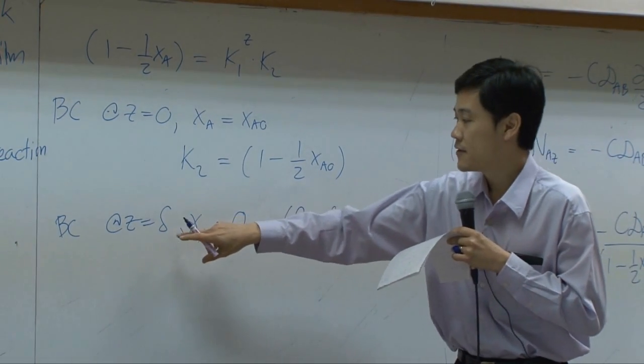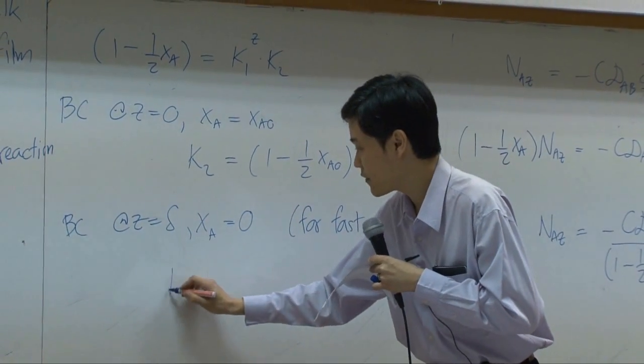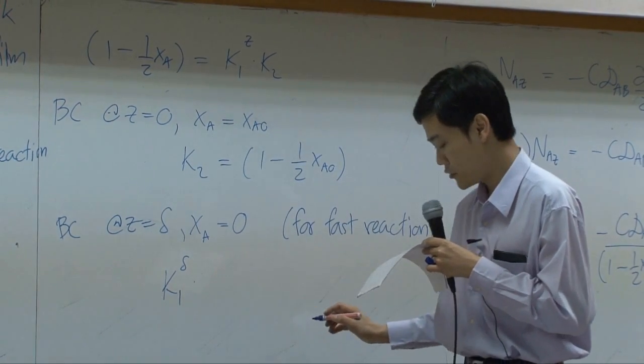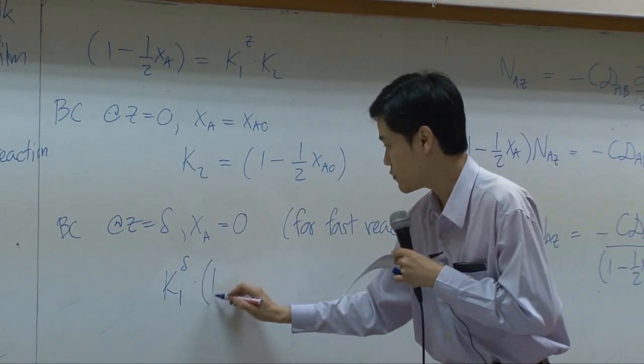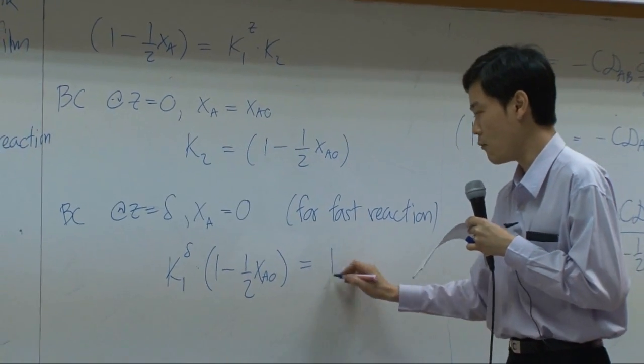So for Z equal to delta, XA equal to 0, you will have K1 times power of delta times K2. K2, which is 1 minus half of XA0, is equal to 1.